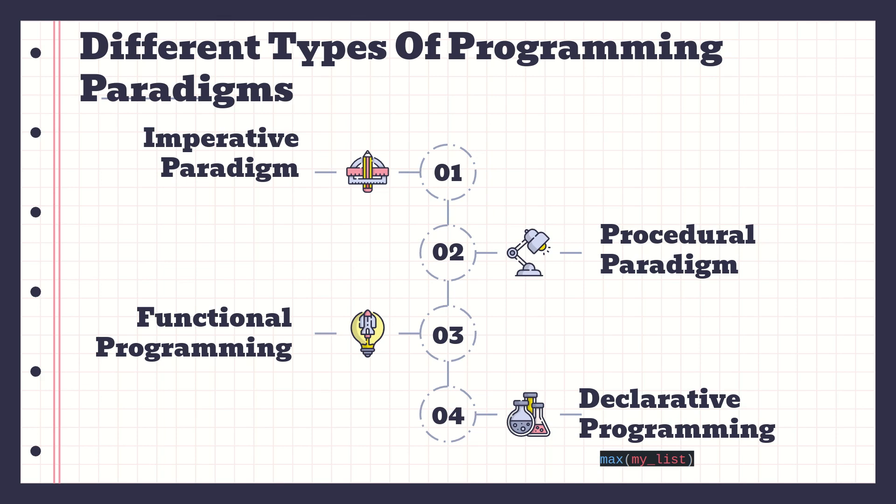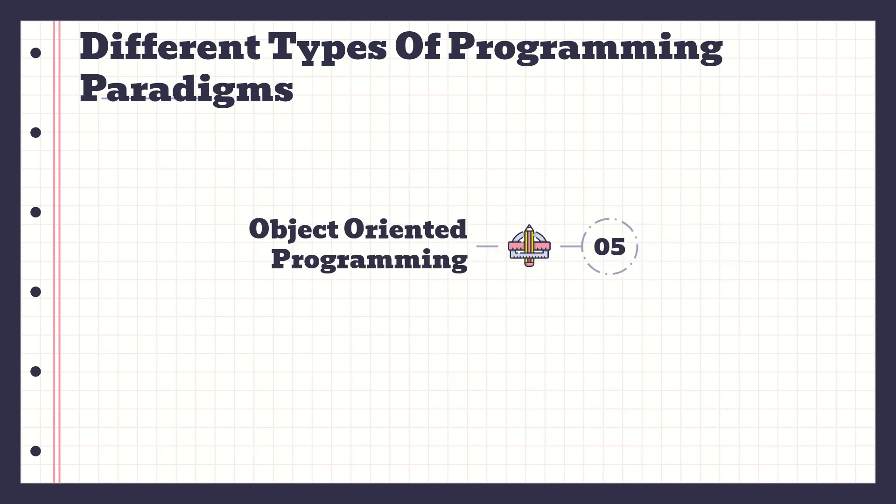Under the hood, imperative programming is still being used. They wrote the function to find the maximum value from an iterable, so in the background imperative programming is still taking place. Everything - functional programming, procedural programming - all falls back to imperative programming, because at the end of the day we still have to tell the computer exactly what to do step by step. So declarative falls back on functional, which falls back on procedural, which falls back on imperative. The programmer just doesn't know what goes on under the hood.